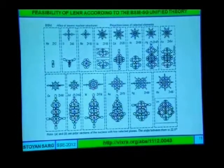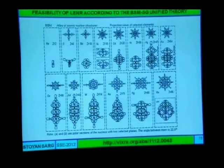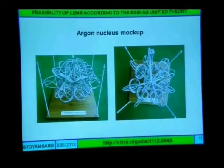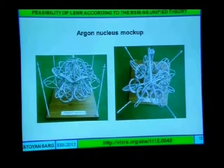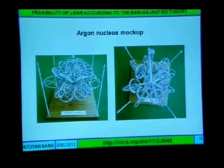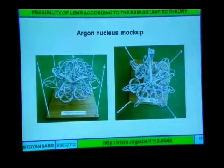Here is another example of other elements — I made this for all stable elements in the periodic table. Here is one mock-up that I made for the argon structure. So these are fractal structures. You could not have freedom to put them in different ways — they just take their place that corresponds to the more dense structure.